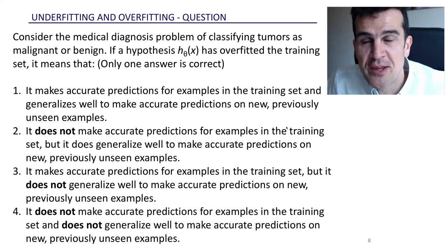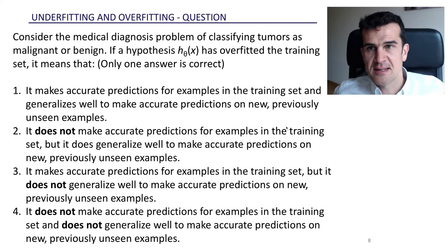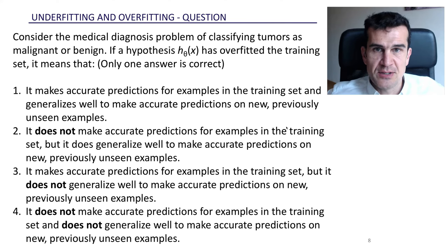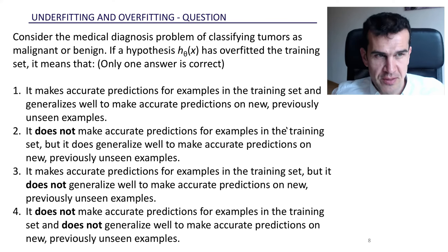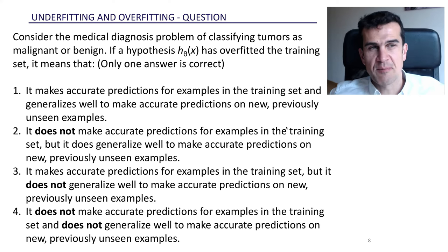Hi guys, so hopefully you've had some time to think about this question and let's look at it together. Consider the medical diagnosis problem of classifying tumors as malignant or benign. If a hypothesis, if a model has overfitted the training set, what does that mean?